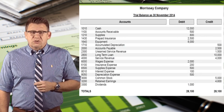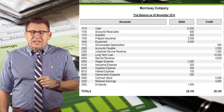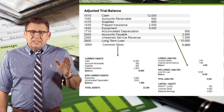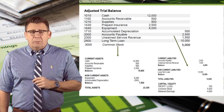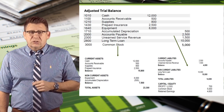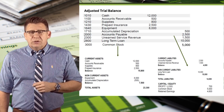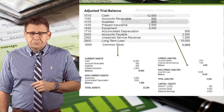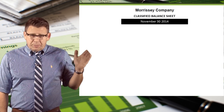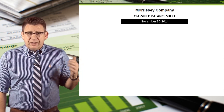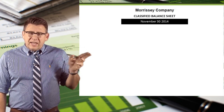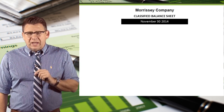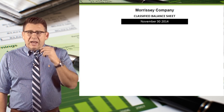So let's use the adjusted trial balance to prepare the classified balance sheet. We will take the assets, liabilities, and common stock from the trial balance and put that on the balance sheet. Additionally, we will use the ending retained earnings from the statement of retained earnings. The balance sheet has the company name, the name of the financial statement, and the date — which is either just the date or sometimes 'as of' and then the date.